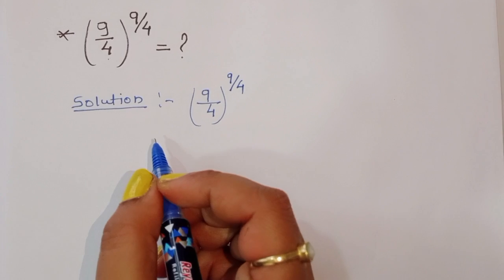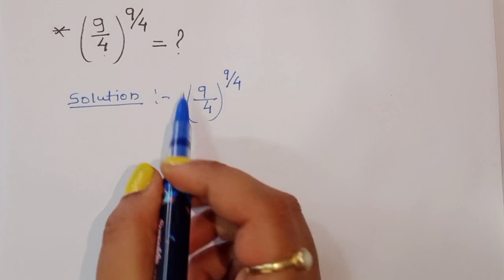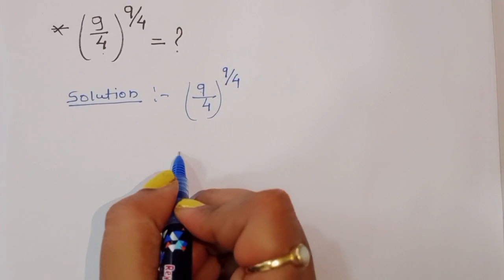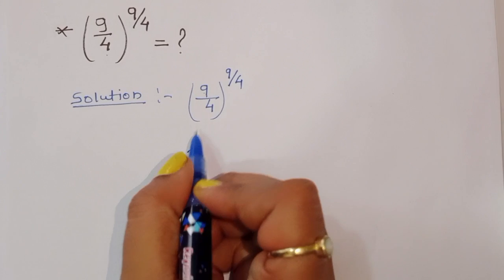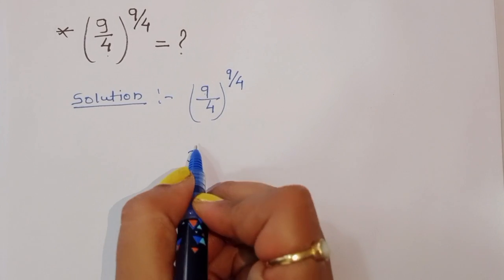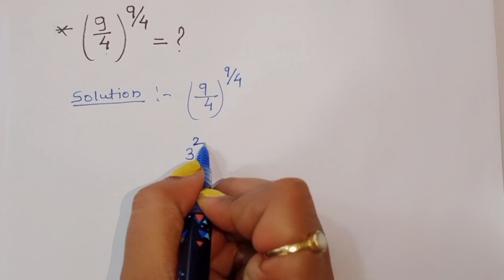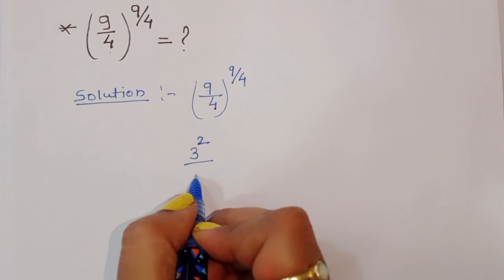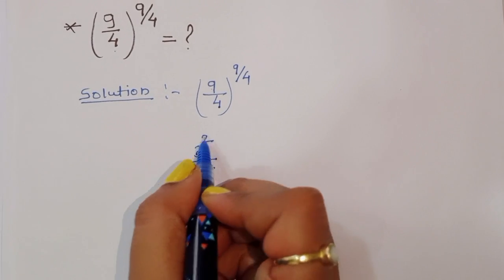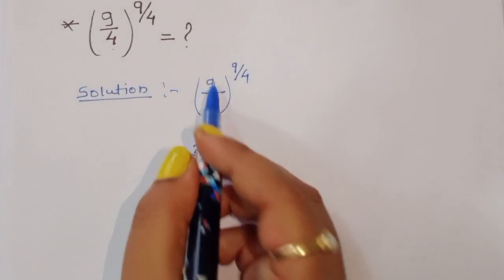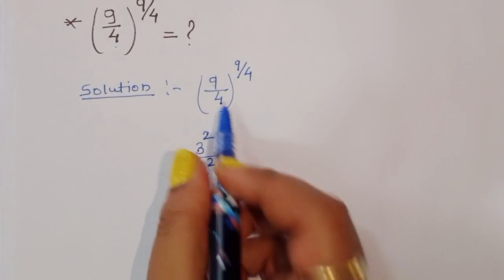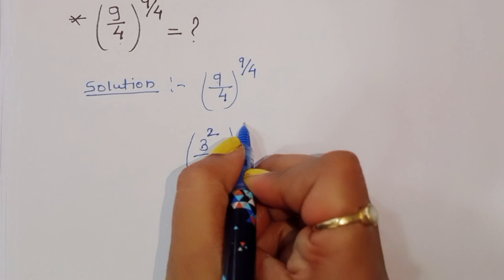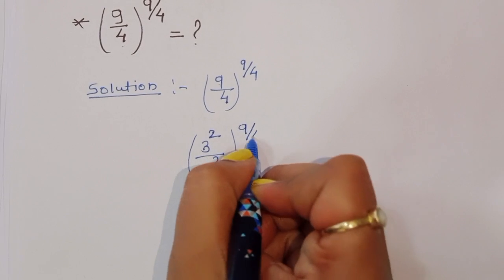We know the formula. First, we note that 9 can be written as 3 squared, and 4 can be written as 2 squared. So we have 3 squared divided by 2 squared, raised to the power 9 over 4.